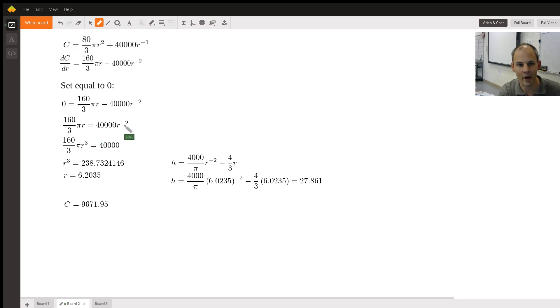I multiply both sides by r². I get r³ here. Divide both sides by 160/3 times π. I get 238.73 and something. I take a cube root. I'm going to round this to four decimal places, 6.2035. That's going to be the radius of the circular elements of this figure.